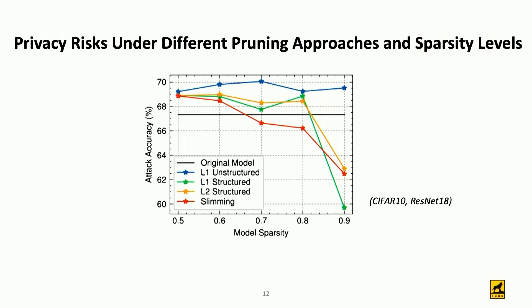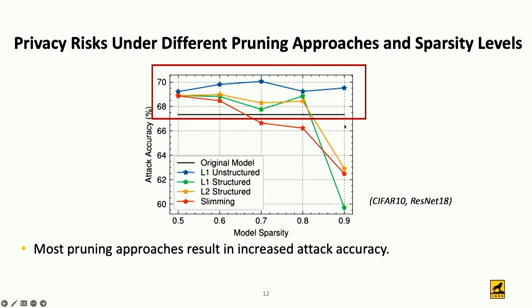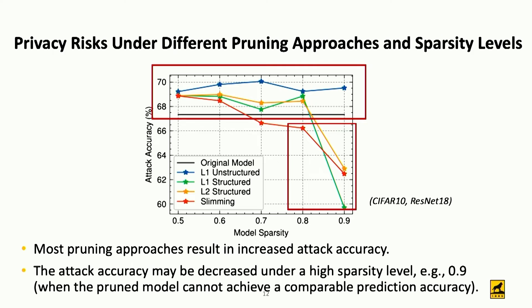Here are our results. We look at privacy risk across different pruning approaches and sparsity levels. The colored curves indicate attack accuracy for different pruned approaches and sparsity levels, while the black curve indicates attack accuracy on the original dense models. We observe that most pruning approaches result in increased attack accuracy, meaning the pruning process increases privacy risk. The attack accuracy may decrease under very high sparsity, such as 0.9, where most models cannot achieve comparable prediction accuracy. This means that if a pruned model achieves good prediction performance and efficiency, it usually results in increased privacy risk.